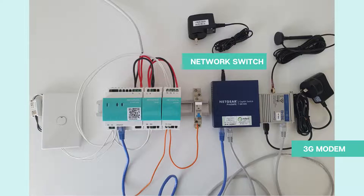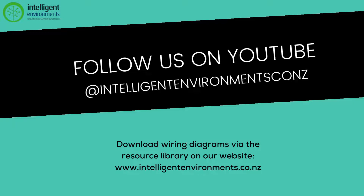Where more than one application controller is required, the design will usually involve a network switch. Connect each application controller Ethernet cable to the ports on the switch. All networking equipment requires a power point to allow a simple plug and play approach. The power point can reside in the DB or adjacent. All wiring diagrams and examples are available for download via our website at www.intelligentenvironments.co.nz. Thank you.